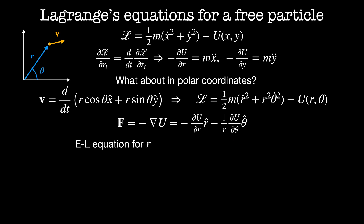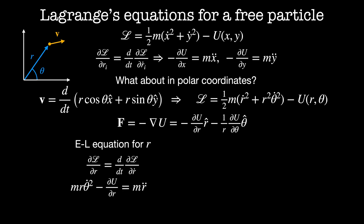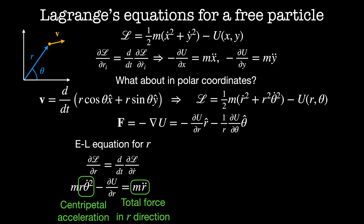The Euler-Lagrange equation for r is dL by dr equals d by dt of dL by dr dot. This gives two terms on the right-hand side, yielding: m r theta dot squared minus dU by dr equals m r double dot. This is telling us that the centripetal acceleration term m r theta dot squared, minus the force from the potential in the r direction, equals the total force in the r direction — so the centripetal force minus the radial potential force equals the net radial force.